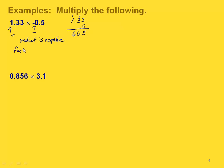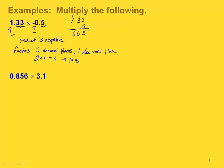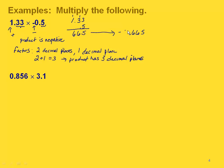Now we know it's going to be negative and we also have to put in the decimal point in the correct place. In our factors, this one had two decimal places and the second one had one decimal place. Adding these together: 2 plus 1 is 3, meaning our product is going to have three decimal places. We're going to count back from our last digit three decimal places, which puts a decimal point in front of our first six. We also write a zero there. So our answer is negative 665 thousandths.